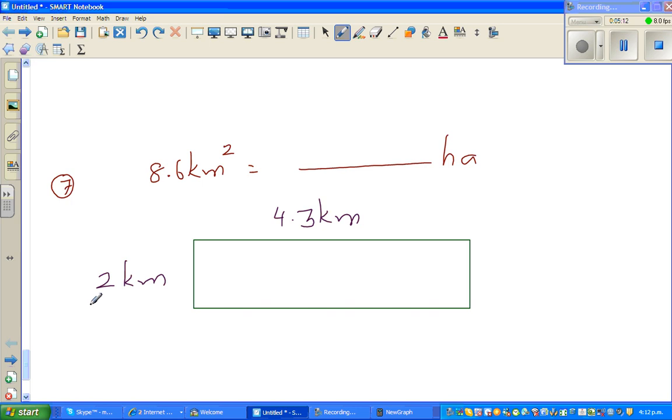2 kilometers is how many meters? That is 2000 meters. And this is how many meters? This is 4000 and 300 meters. This 0.3 kilometers is 300 meters, so this is 4300 meters.